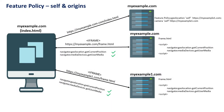Now let's see the behavior of combining self with origin values. Setting self along with myexample1.com for both geolocation and camera APIs means access is allowed from the same document and from other documents from the same origin — myexample.com/frame.html can access the API. The specified cross-origin domain myexample1.com/frame.html can also access it, but it will be blocked for other cross-origin domains like myexample2.com.